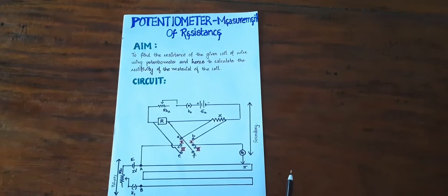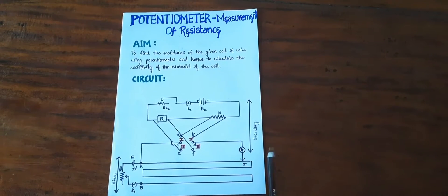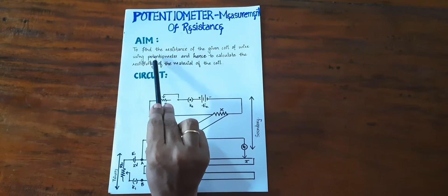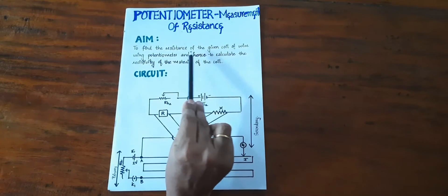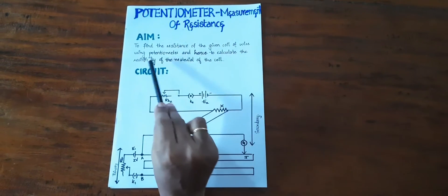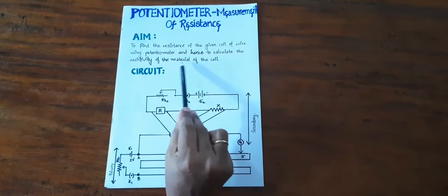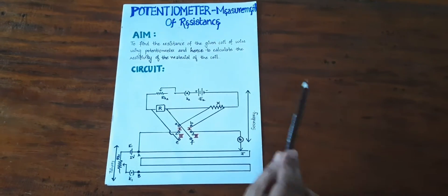In this session, let us do an experiment to find out the resistance and resistivity of a given wire. We will make use of the potentiometer circuit for this purpose. The aim is to find the resistance of a given coil of wire using a potentiometer, and hence to calculate the resistivity of the material of the wire.